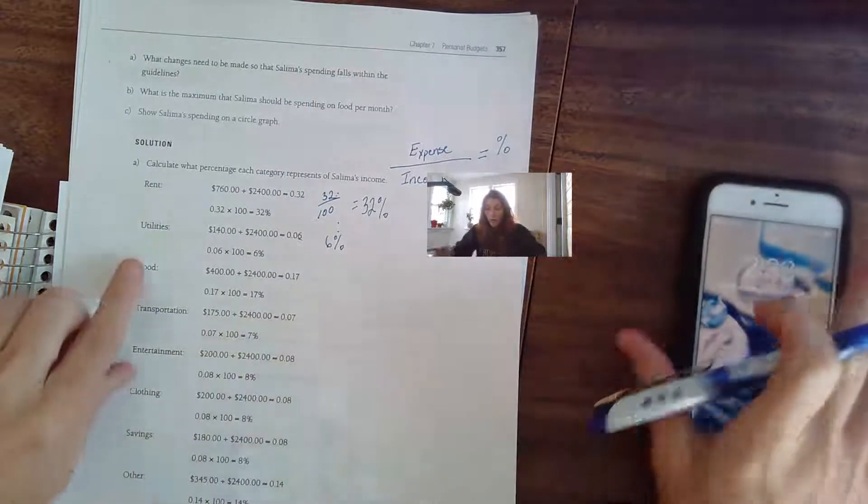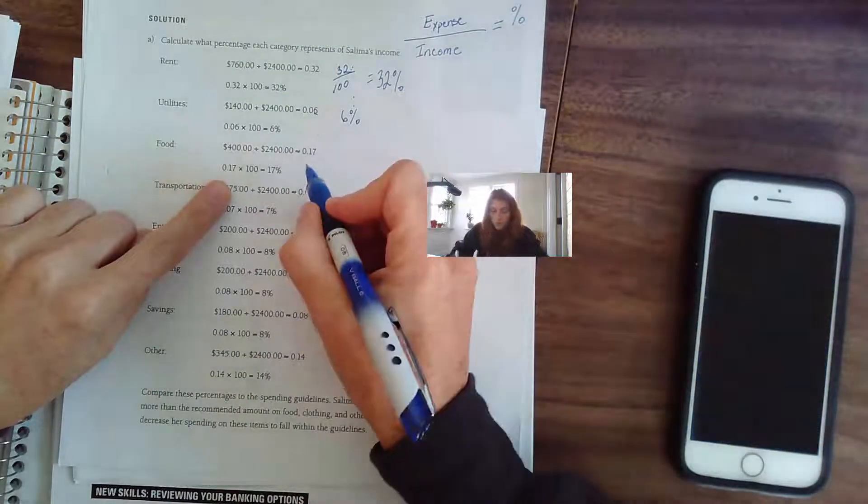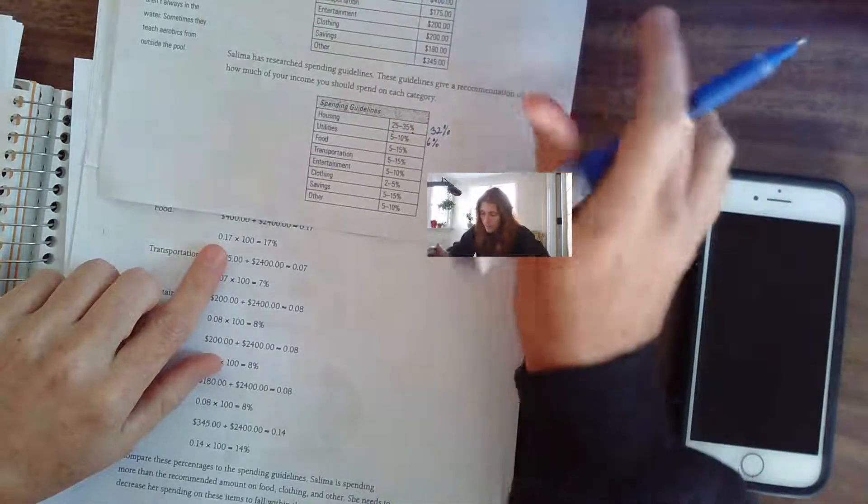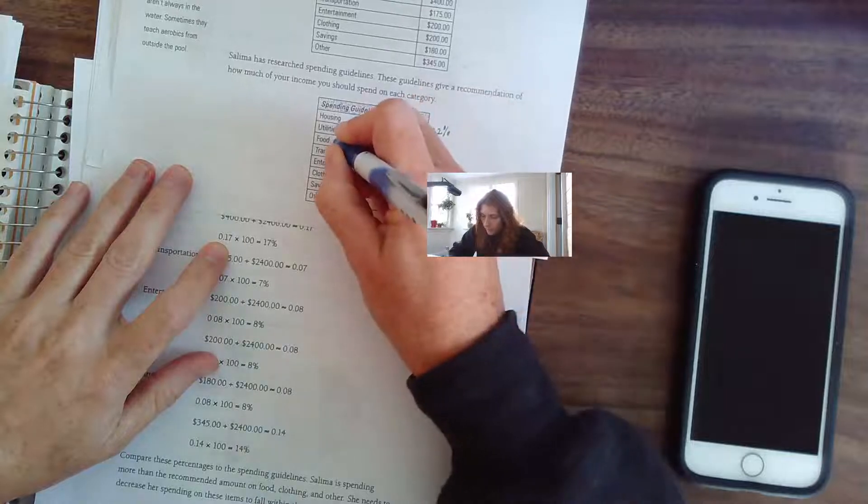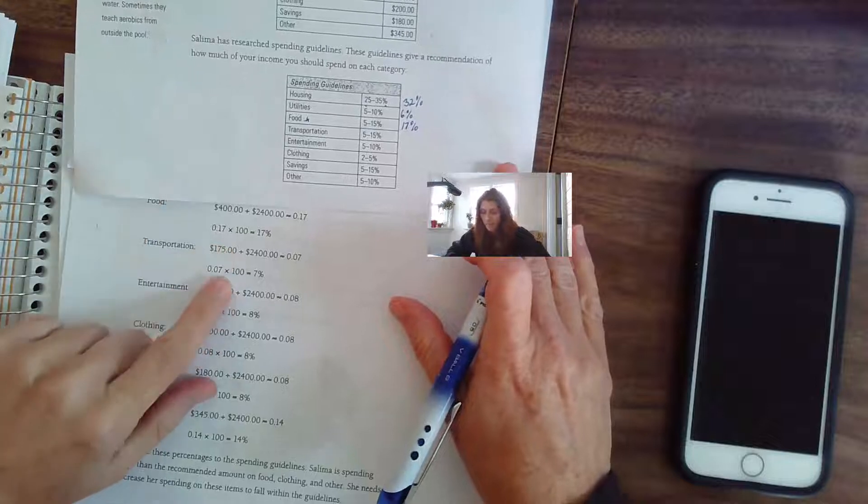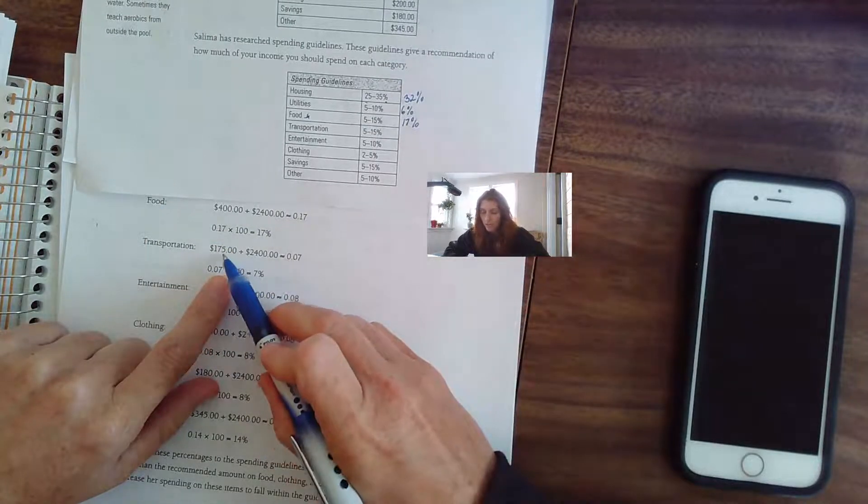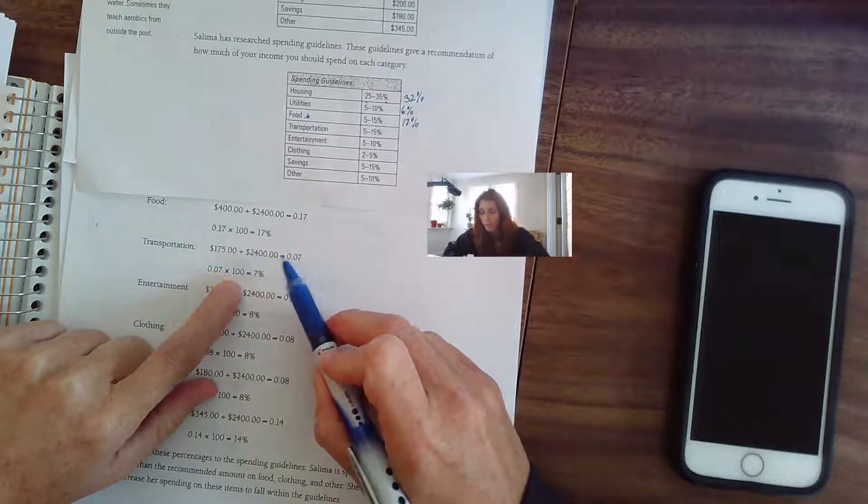So we go through all of the rest of the things. Food, she was paying 17%. 17% on the chart—uh-oh, food is a little bit high. I'm going to just mark that one to remind us that one's a bit high. Transportation, 7%, so she's doing well for transportation. That one was good.